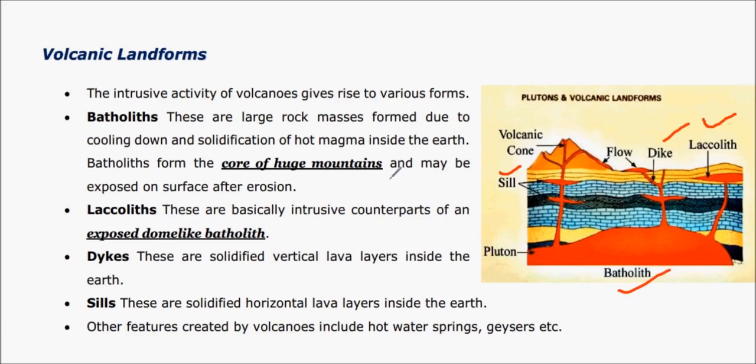This is mainly an intrusive activity that happens within the Earth's surface. Most of it is not observed above the Earth. These volcanic shapes are formed due to cooling of magma, mostly occurring within the surface. The first example is batholith.